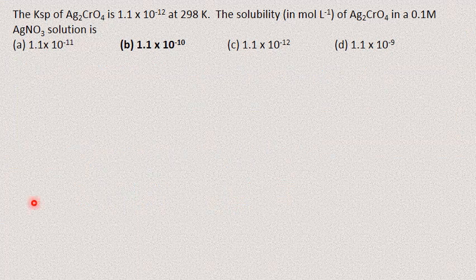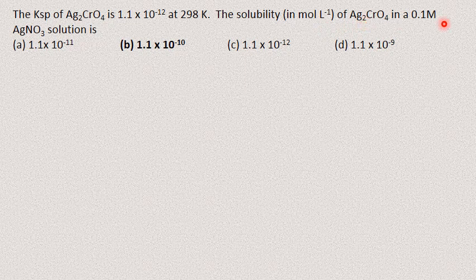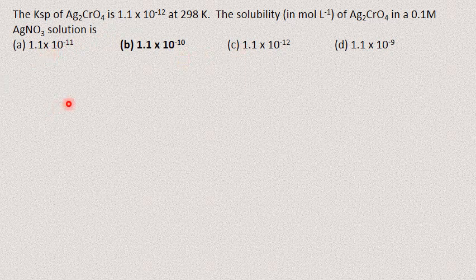The Ksp of silver chromate is 1.1 × 10⁻¹² at 298 K. Find the solubility of silver chromate in 0.1 M silver nitrate. This is similar to the previous problem, but here Ag⁺ is the common ion (cation) rather than an anion. You can apply the same method — substitute [Ag⁺] from AgNO3 into the Ksp expression to find the molar solubility.